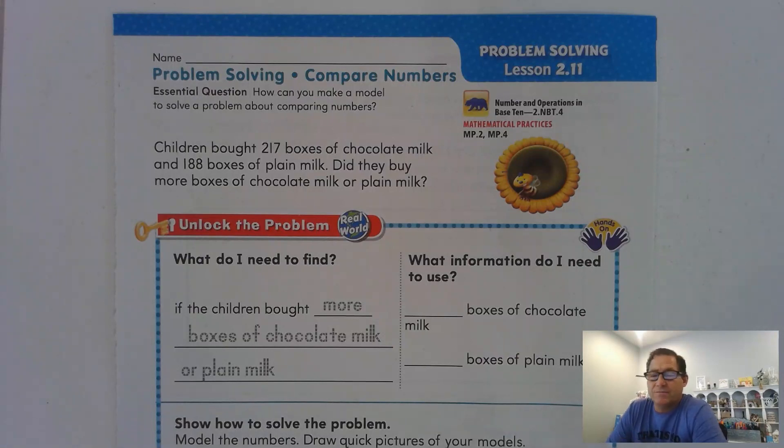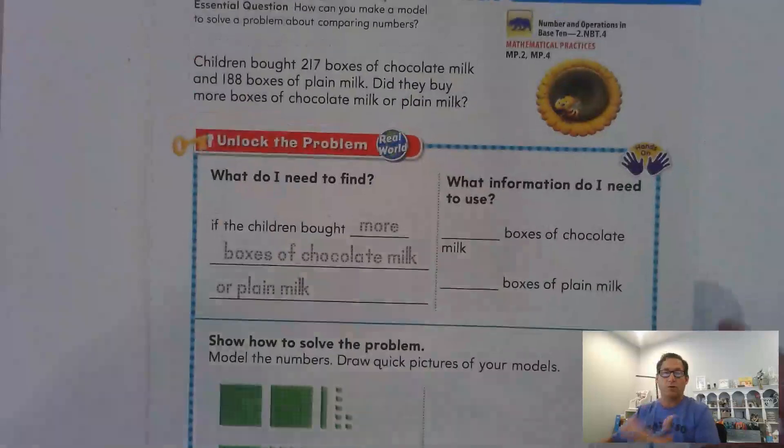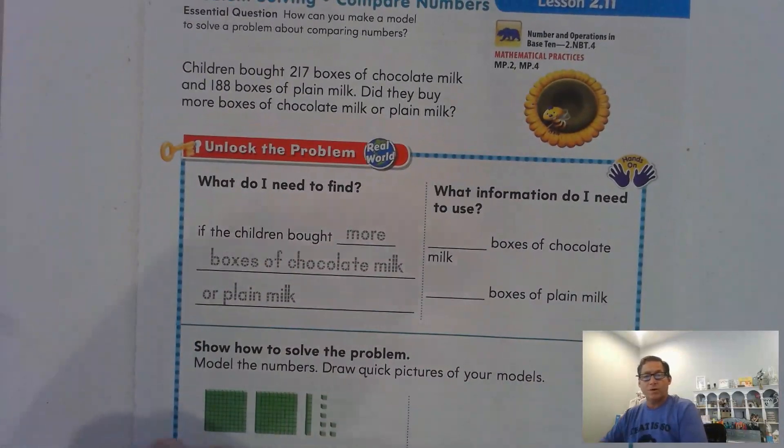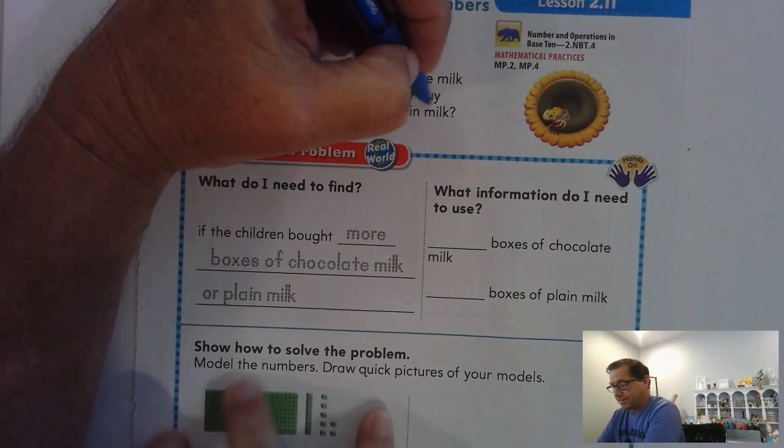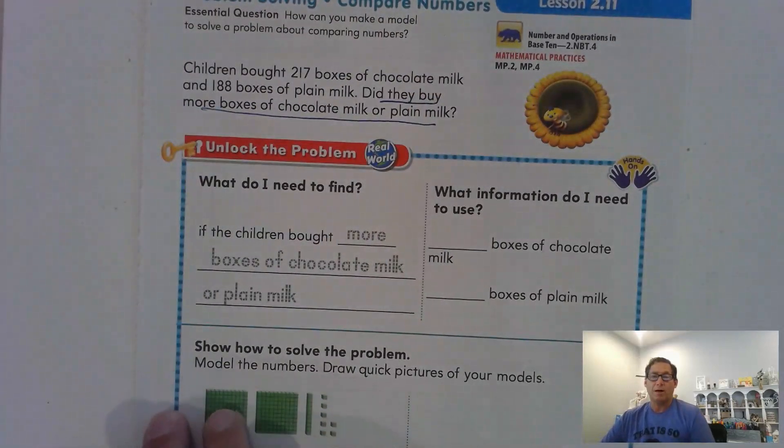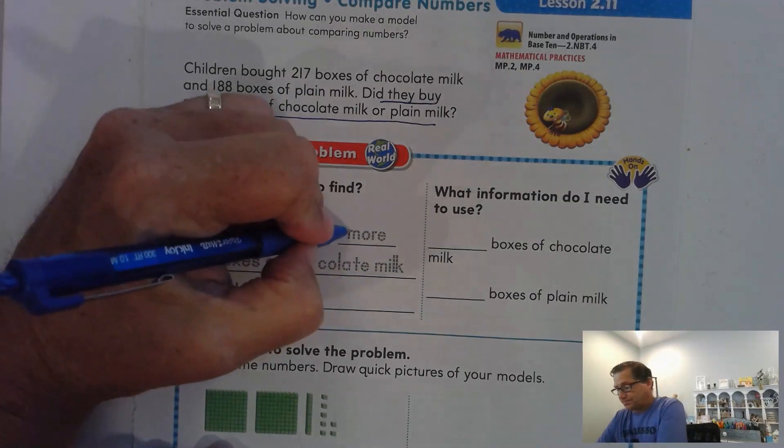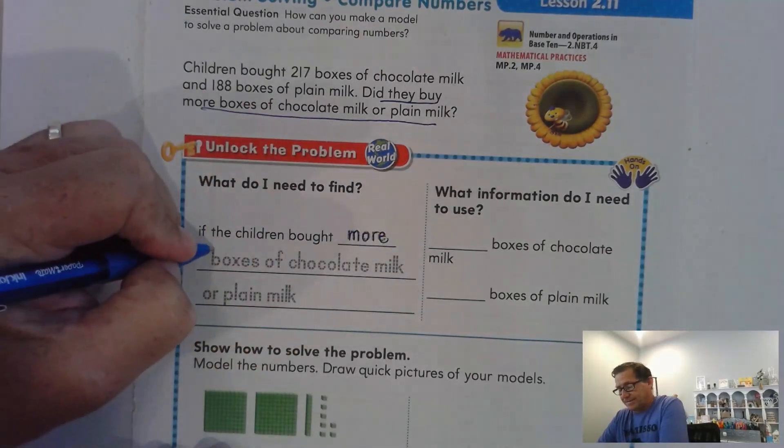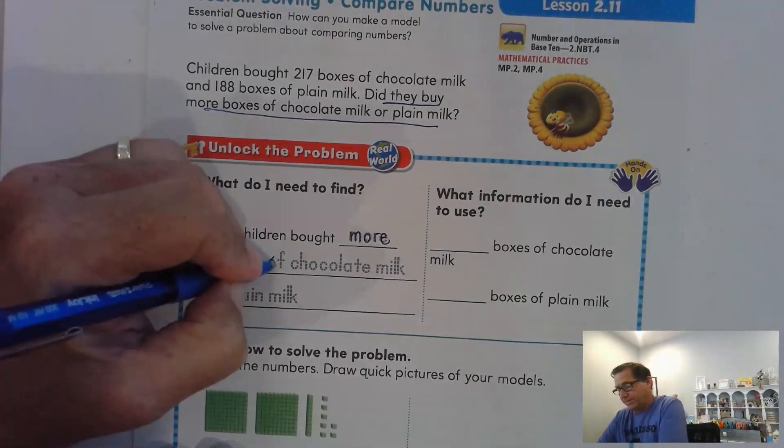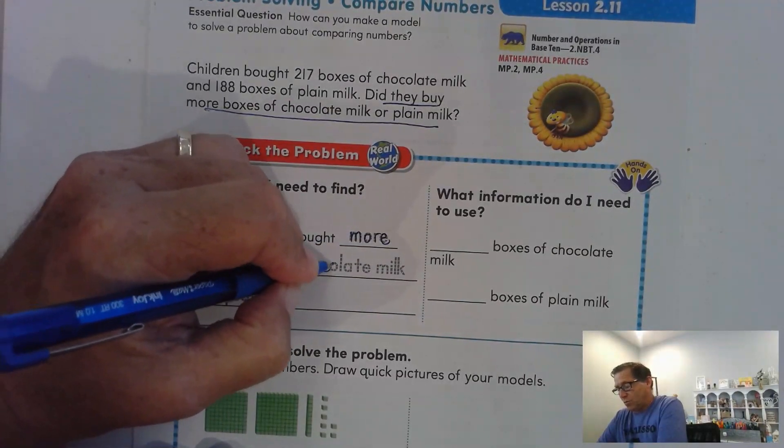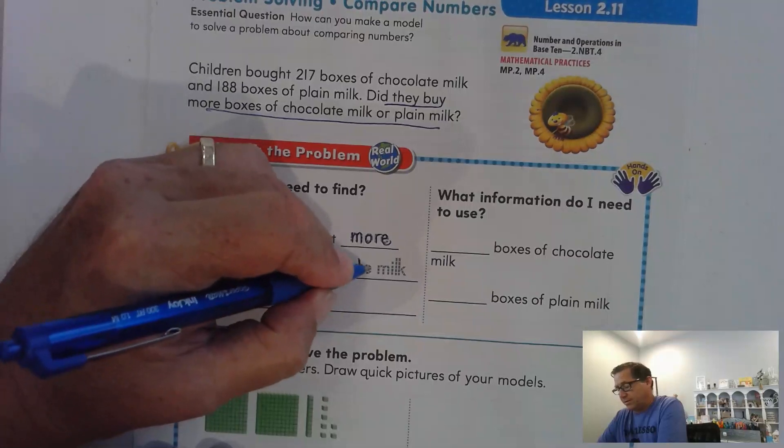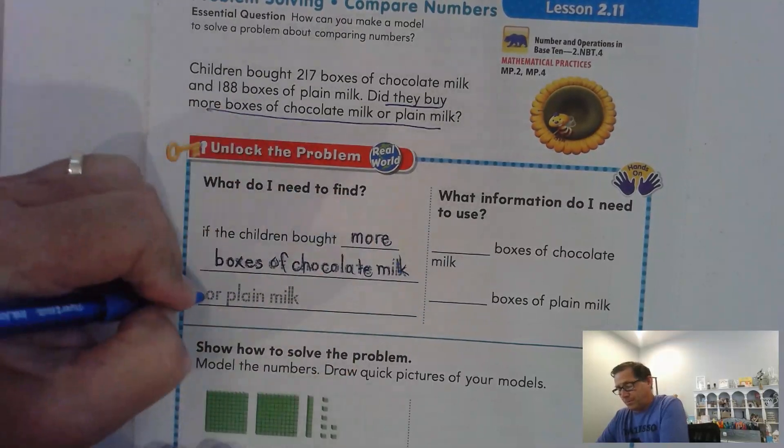Now some of you may look at that number and already immediately know which one was more. But in this lesson, we're practicing making models to prove that we're right. So what do I need to find if we unlock the problem? We have to find out, did they buy more boxes of chocolate milk or plain milk?